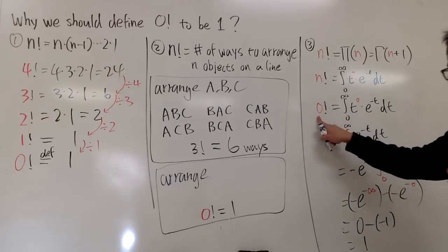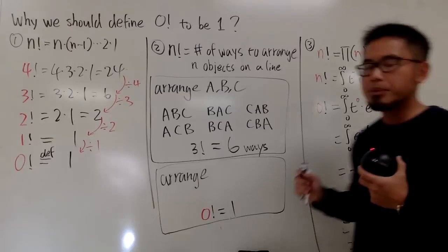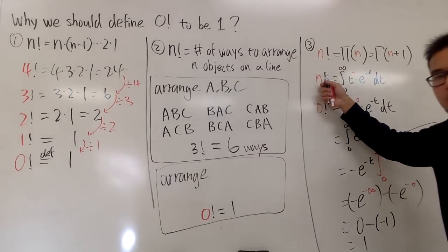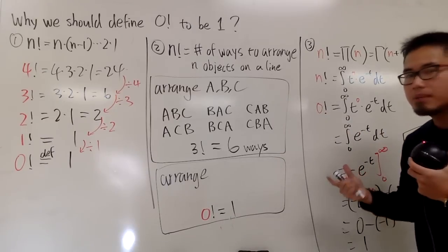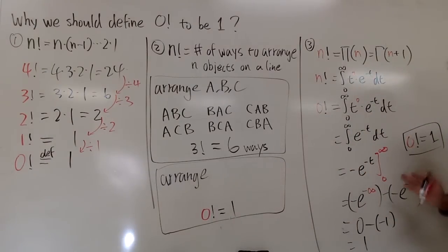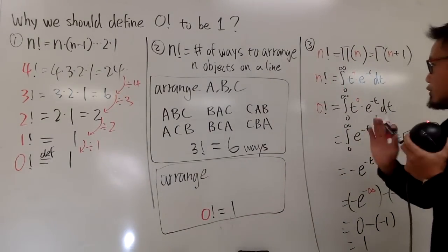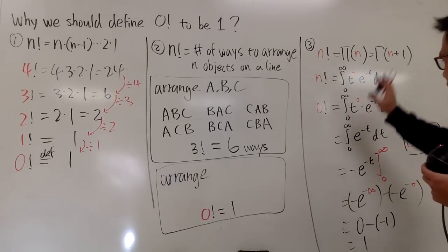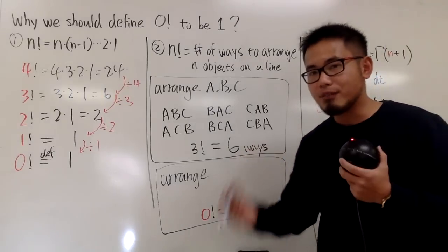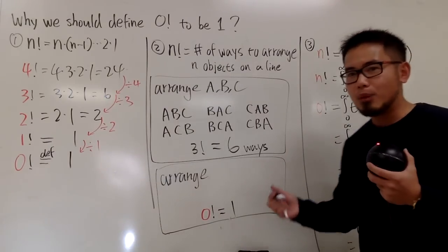Since e to the negative infinity goes to 0 in the denominator, that term is 0. So we have 0 minus negative 1, which equals 1. Therefore 0 factorial equals 1. You can also plug in n equal to 1/2 or negative 1/2 or other fractions, but plugging in a negative integer won't work because the improper integral diverges.